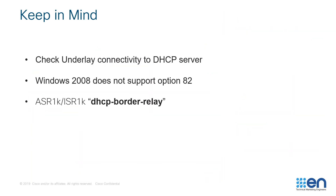A couple of things to keep in mind. Be sure to check underlay connectivity to the DHCP server — this may sound trivial, but it is always a first step when troubleshooting. DHCP servers must also support option 82 in order for DHCP to work. For example, Windows 2008 does not support option 82. Additionally, ASR and ISR 1Ks will have the DHCP border relay command automated by Cisco DNA Center on their interface loopbacks.